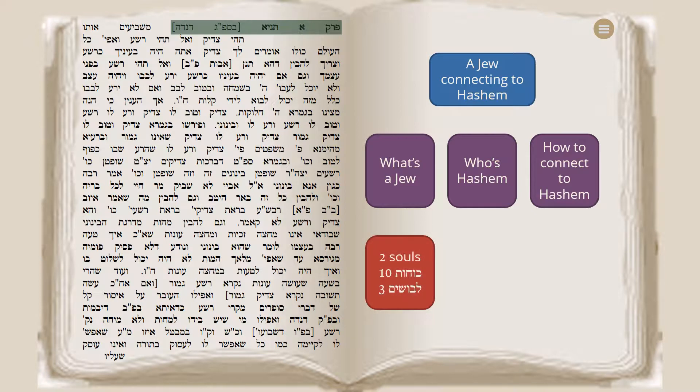Here we have a small map that presents one of the two things that the Alta Rebbe teaches in the 53 prakim of Lokutu Yamarim. We can say that the Alta Rebbe teaches two things in these 53 prakim. Number one, he teaches how a Yid can go about connecting to Hashem. And number two, he teaches what is the purpose that a Yid is created for.